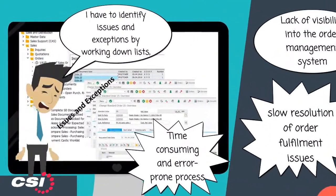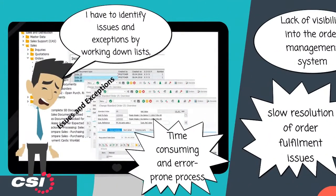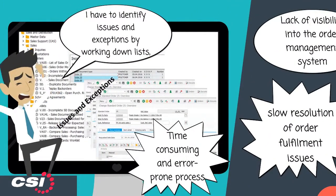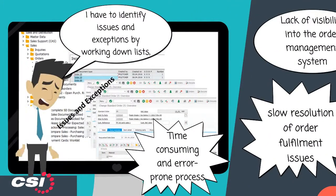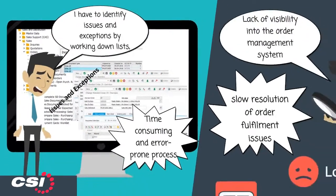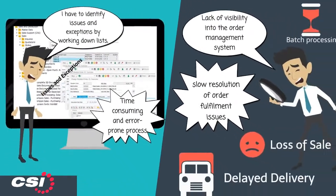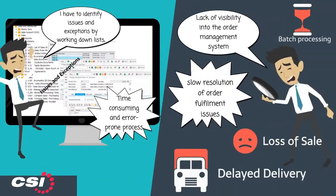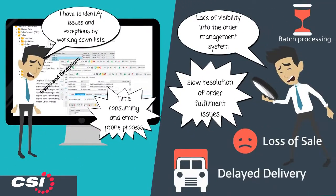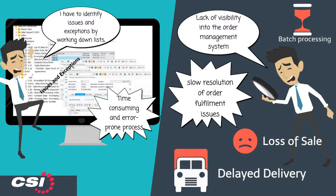Issues and exceptions are typically identified by working down multiple lists, a time-consuming and error-prone process. Slow resolution of order fulfilment issues risks delayed delivery due to a lack of visibility into the management process.